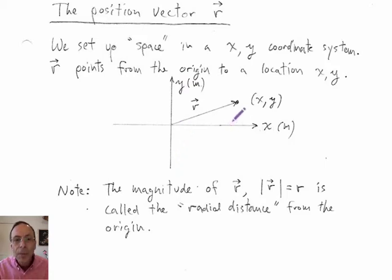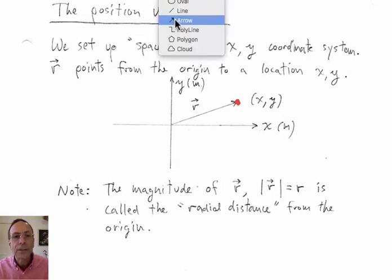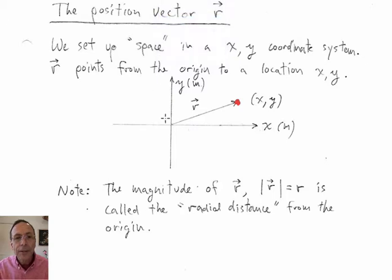And we may be interested in some location x, y, which I'll just mark right here. And the position vector starts at the origin. Let's draw it with an arrow. Starts at the origin and points to the x, y location.